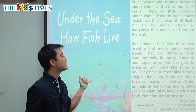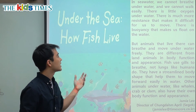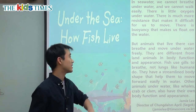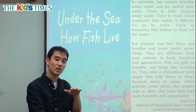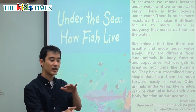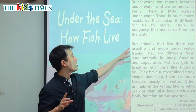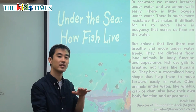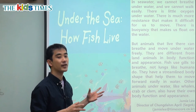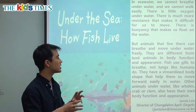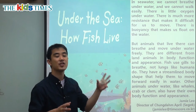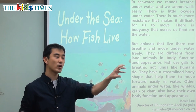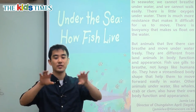But animals that live there, like fish and sharks, can breathe and move underwater freely. This is the main idea: people cannot breathe underwater, cannot move underwater, cannot go freely underwater. But animals like fish and sharks, they can move underwater very easily and they can breathe underwater. They are different from land animals in body function and appearance — how the body works and how it looks. The fish looks different from the bear. The fish swims, the bear runs.